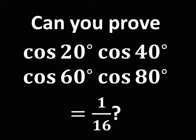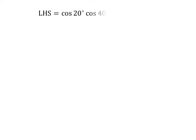In this video, we will learn to verify the given identity: cosine of 20 degrees times cosine of 40 degrees times cosine of 60 degrees times cosine of 80 degrees is equal to 1 upon 16. The left hand side of the identity is equal to cosine of 20 degrees times cosine of 40 degrees times cosine of 60 degrees times cosine of 80 degrees.